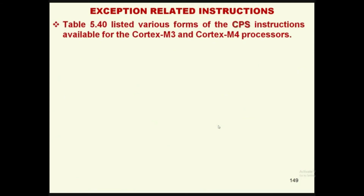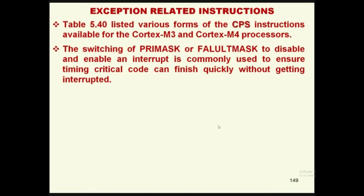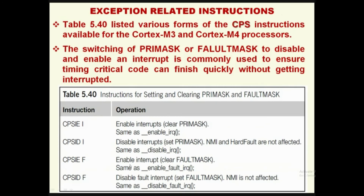Table 5.40 lists the various forms of the CPS instruction available for the Cortex-M3 and Cortex-M4 processors. Switching PRIMASK or FAULTMASK to disable or enable interrupts is commonly used to ensure timing-critical code runs quickly without being interrupted. CPS IE means interrupt enable; CPS ID means interrupt disable. The CPS instructions are used for modifying special registers: CPSIE I enables interrupts via PRIMASK, CPSIE F enables via FAULTMASK, CPSID I disables via PRIMASK, and CPSID F disables via FAULTMASK, as clearly shown in table 5.40.